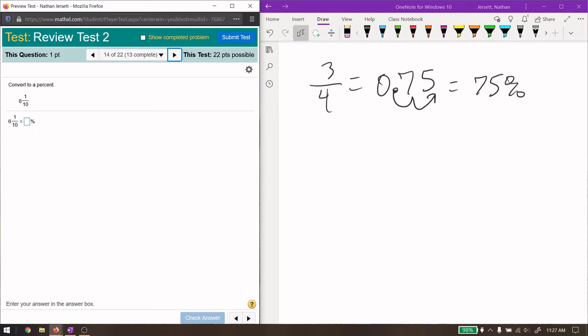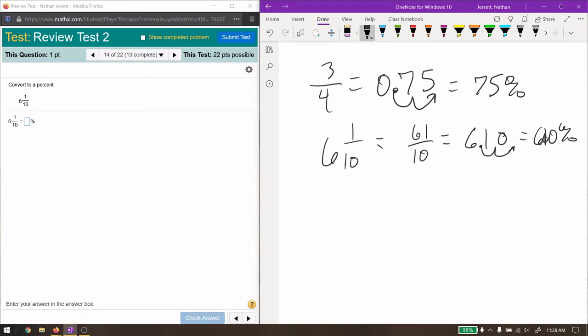This one's actually a little bit simpler. You can change this to an improper fraction and then do the division. What you'll see is you get 10 times 6 is 60 plus 1 is 61, so 61 over 10 is 6.1. Then move the decimal point two spaces, add a zero where there's an empty spot, and you get 610%.